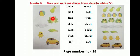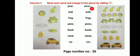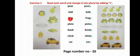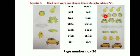Now, students, see page number 26 for your exercises. Once again: pear → pairs, ball → balls, frog → frogs, plate → plates, book → books, chick → chicks, car → cars. Got it, students? Singular means only one thing and plural means more than one.